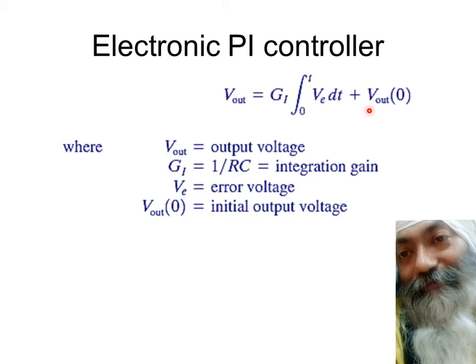Here we are once again - the output is Vout and the gain is now taken as GI. This GI, the integration gain, is given by 1 upon RC. Remember I told you that the value of R is adjustable. You can change the value of R to change the value of GI. VE is the input in the form of error voltage, and Vout at time t equals 0 is the initial output voltage which is available in the form of residual charge on the capacitor.